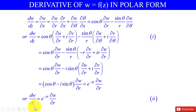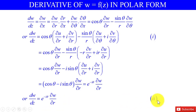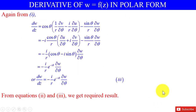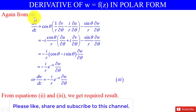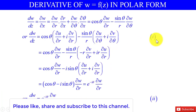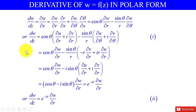Therefore, dw/dz = e^(-iθ) · ∂w/∂r. This is equation number 2. Now, returning to equation number 1: